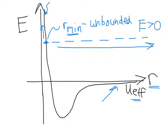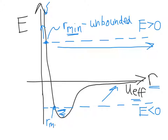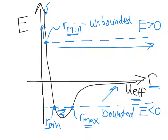What about a case where the total energy is less than 0? If the total energy lies below zero, the energy will lie in the well of the effective potential curve. This represents a bounded orbit: the closest the two particles can get is r min, where the energy crosses the effective potential, and the farthest they can get is r max on the other side. So as these two particles orbit around one another, they are confined between r min and r max. You always have a bounded orbit when the total energy of the system is less than 0.